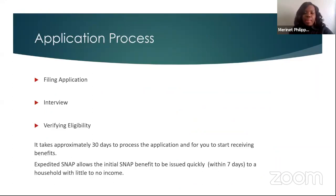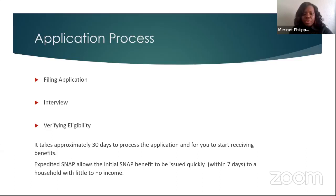There are three basic steps in the SNAP application process. You fill out your application, and the date the department receives your application is your application date. After the application is received, you may receive a notice to conduct an interview. During that interview, they will ask you a series of questions concerning the household circumstances provided on the application, and address any discrepancies. Then your eligibility is verified. It takes approximately 30 days to process your application. However, expedited services allow initial SNAP benefits to be issued within seven days for households with little to no income.